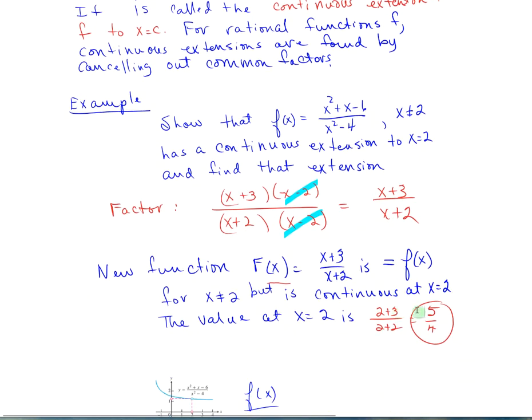For example, show that this function for x not equal to 2 has a continuous extension to x equals 2 and find that extension. If we factor the top and we factor the bottom, those two factors cancel.